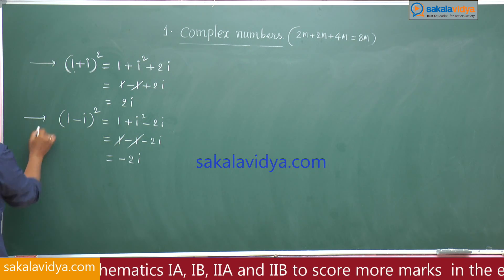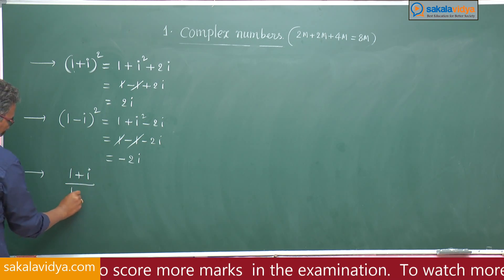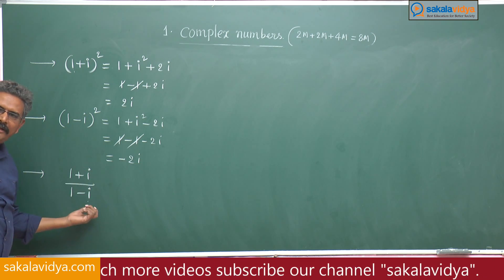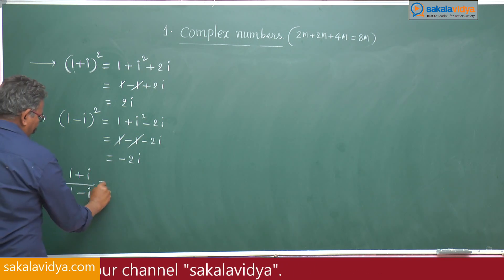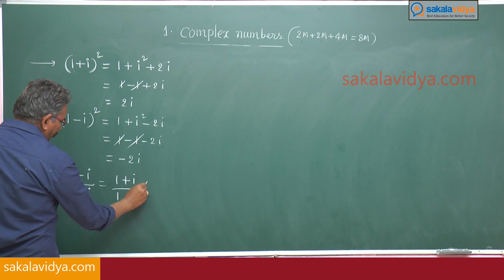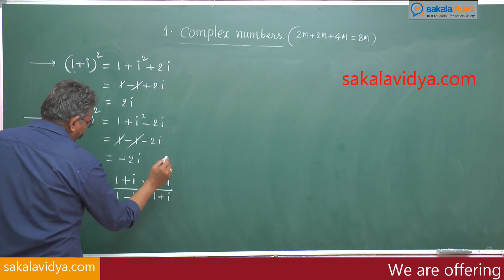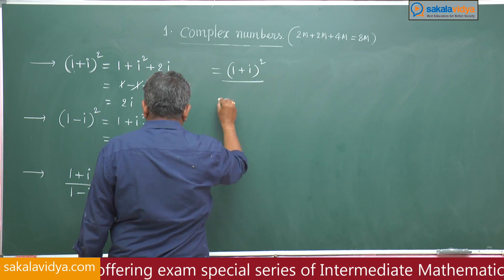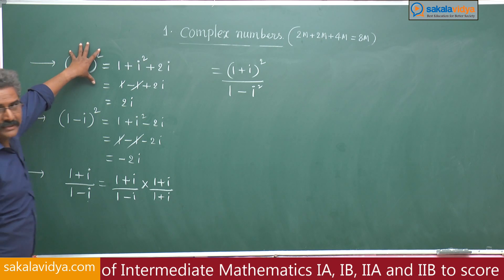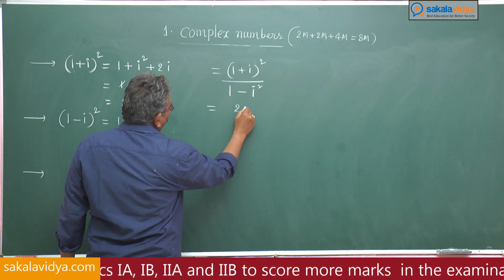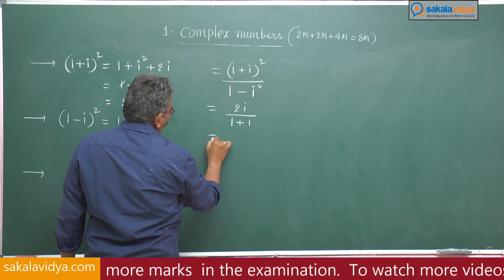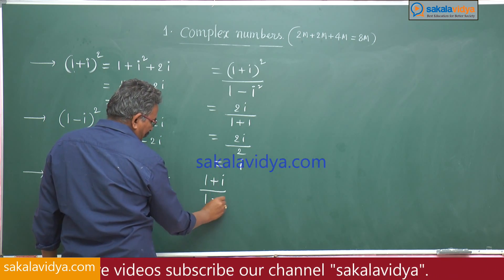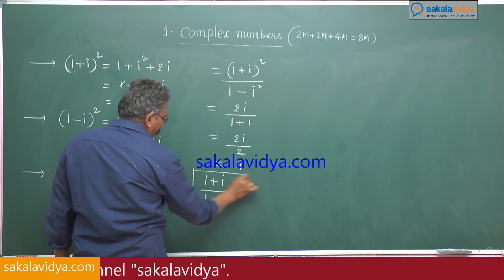Similarly, (1+i)/(1-i) — what do you get? Multiply both numerator and denominator with the conjugate of (1-i), that means (1+i)/(1-i) multiplied with (1+i)/(1+i). This equals (1+i)² divided by 1 minus i². (1+i)² is 2i, so this is 2i by (1+1), which is 2i/2. So (1+i)/(1-i) is nothing but i — you can remember this one also.